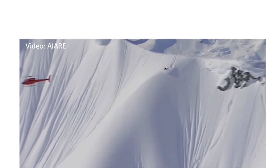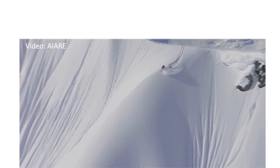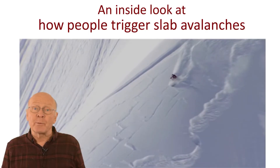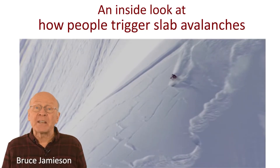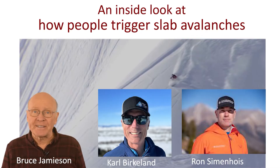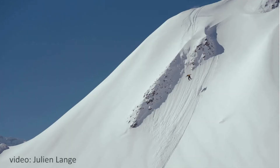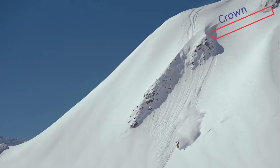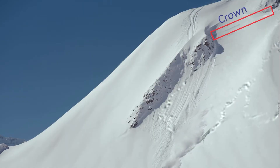When someone triggers a slab avalanche, what is going on inside the snowpack? To get a current understanding of the process inside the snowpack, I teamed up with avalanche scientists Carl Berkland and Ron Semenhuis. In this clip, the crown fracture appears upslope of the rider. To see the connection between the rider and the crown fracture, let's look inside the snowpack with an animation.